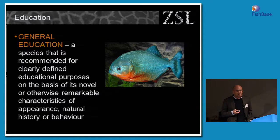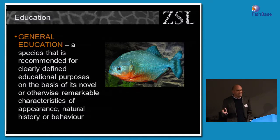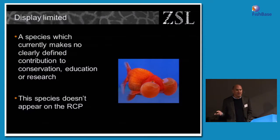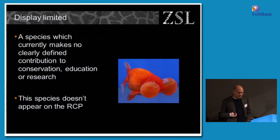A species can fill more than one role in our collections — it could be an Arc species while also being the subject of research and an educational program. But if it doesn't fill any of those roles, it's not part of the regional collection plan. If a species is display-limited — it doesn't fill any of those seven roles and makes no contribution to any of those activities — then the species would not appear on the RCP.